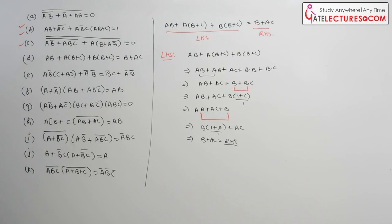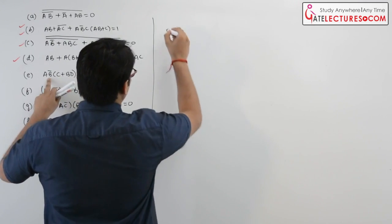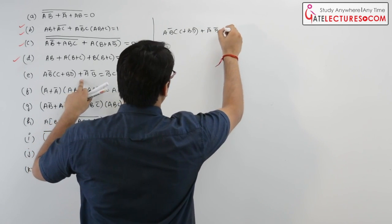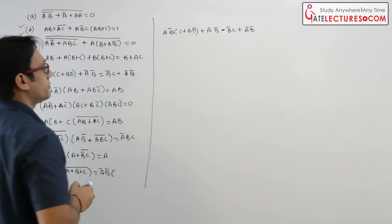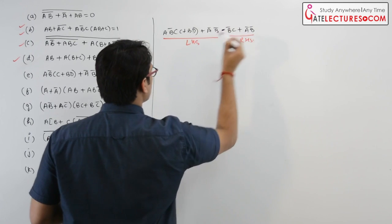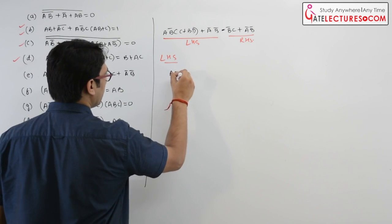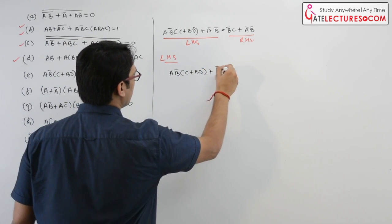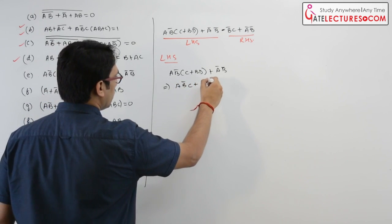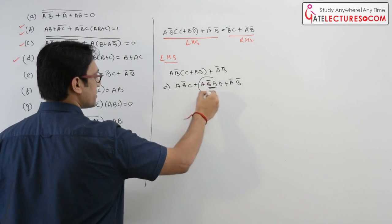This was one of the easiest questions. Now let us take the next question. It says we have to prove: AB'C + BD + A'B' = B'C + A'B'. This is the left hand side and this is the right hand side. Taking the LHS: AB'C + BD + A'B'. Opening the brackets gives AB'C + AB'BD + A'B'.